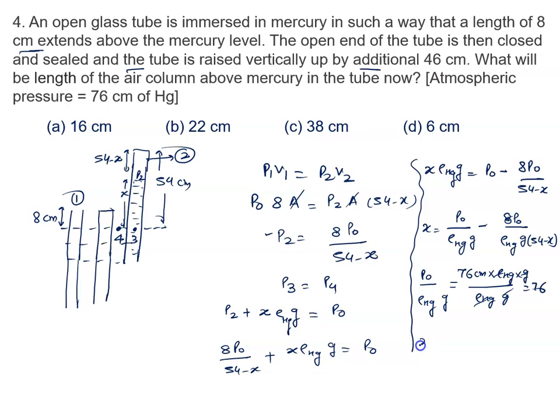We put all the values: x equal to P0 upon rho mercury into gravity is 76 minus 8 P0 upon rho mercury into gravity is given by 8 into 76 upon 54 minus x. We will solve it further. And we will write 8 into 76 upon 54 minus x equal to 76 minus x. We will solve it for x.